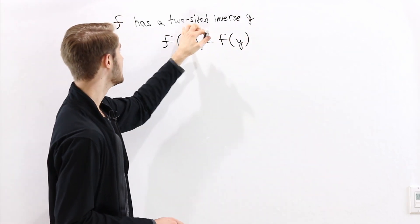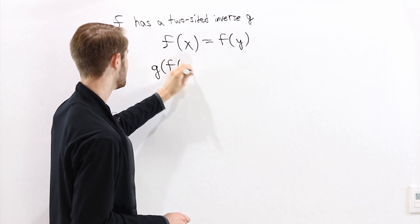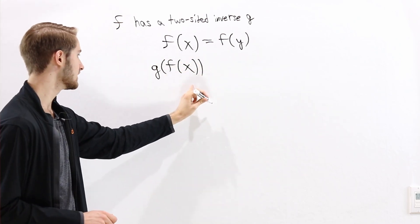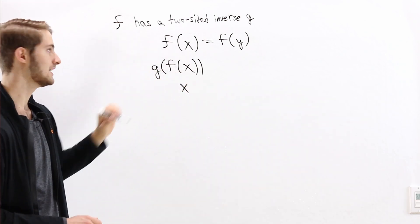One of the requirements for g to be a two-sided inverse is that if we take g of f of x, then this whole thing is just the same thing as x. So we can use g to kind of cancel out f.